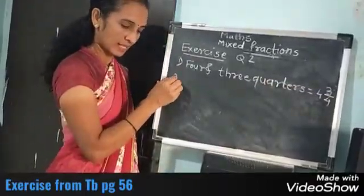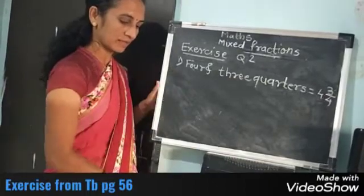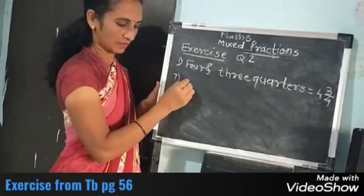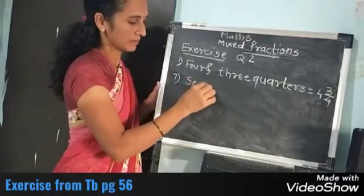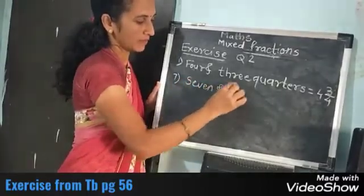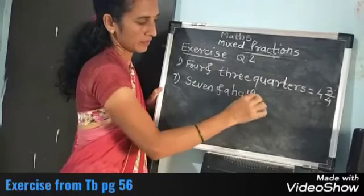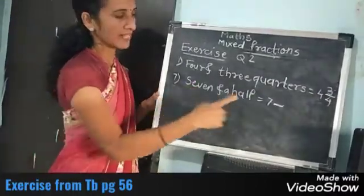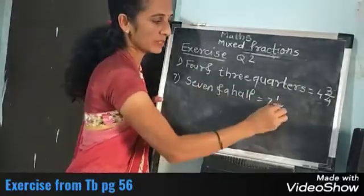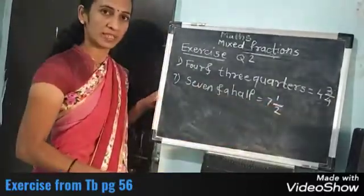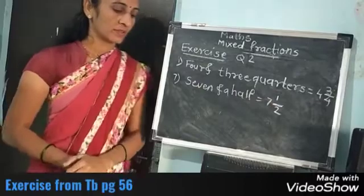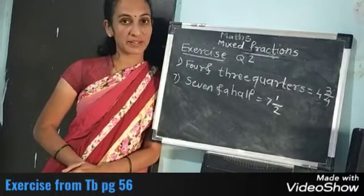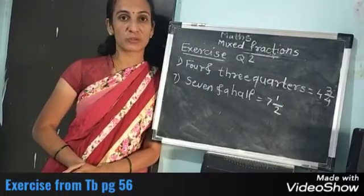Now the last example I will take — the seventh one: 7 and a half. Write it down in fractions: 7 and a half. A half means 1 upon 2. Got this? So students, in this way you have to solve this exercise from textbook page number 56 in your notebook.